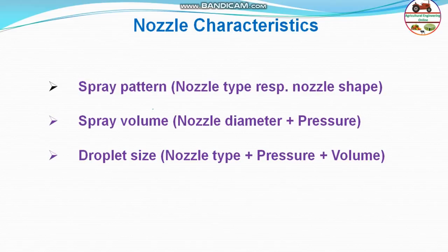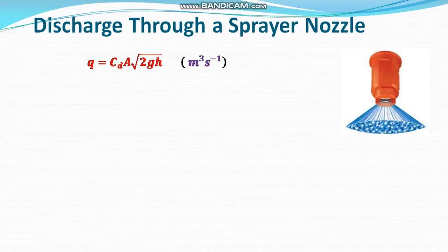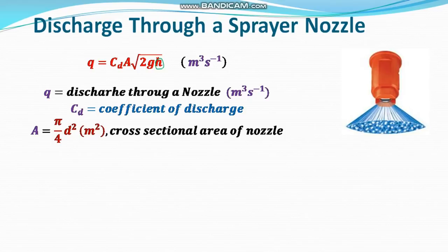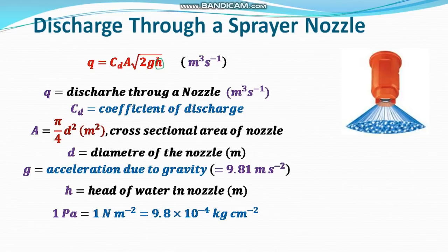The discharge through a sprayer nozzle is given by: Q = Cd × A × √(2gH), where Q is discharge, Cd is the coefficient of discharge depending on orifice shape and size, A is the area of the orifice, g is acceleration due to gravity, and H is the pressure head in meters. To convert: 1 kg/cm² equals 10 meters of water head; 1 N/m² (Pascal) equals 9.8 × 10⁻⁵ kg/cm².